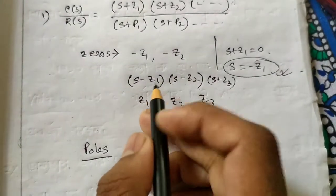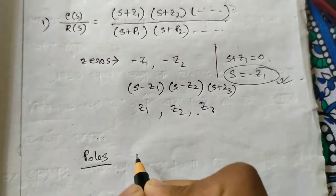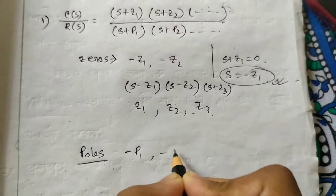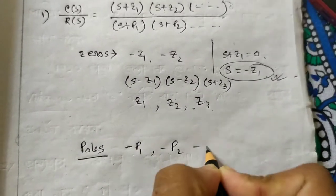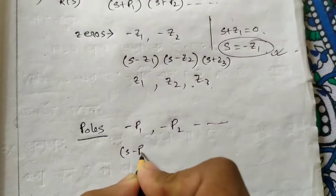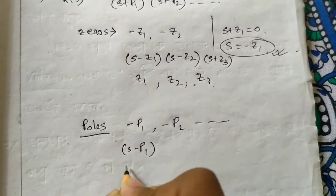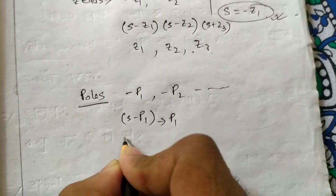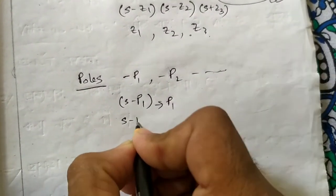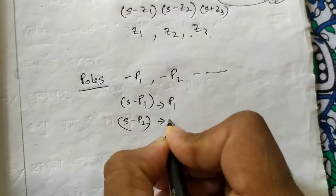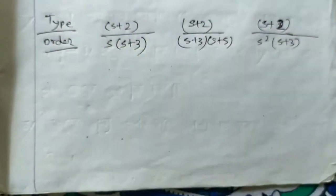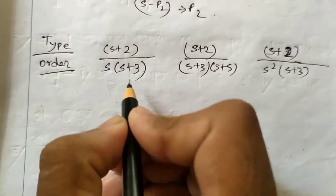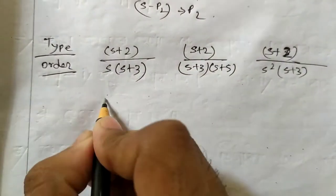Now coming to poles — the denominator roots give us the poles. The poles will be minus P1, minus P2, and so on. If the term is (S + P1), then the pole is at minus P1; if the term is (S - P2), then the pole is at P2.